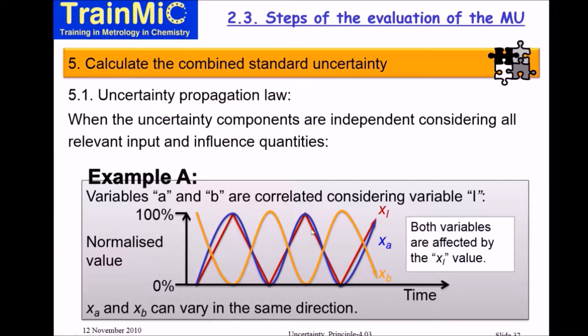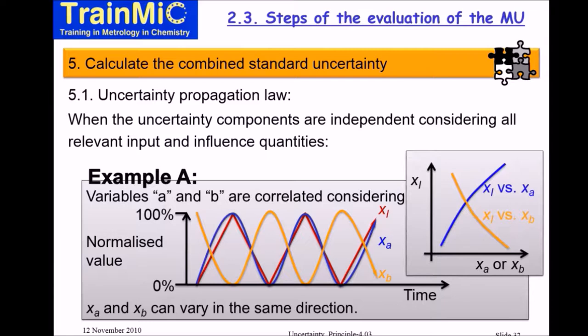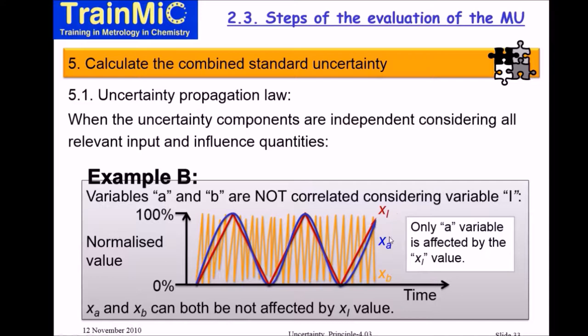So you cannot use the formula I will present when variables are dependent. In the case where variables are independent, X_B is a noisy line — completely independent of X_A. When they are independent, you can use the uncertainty propagation law as I will show.